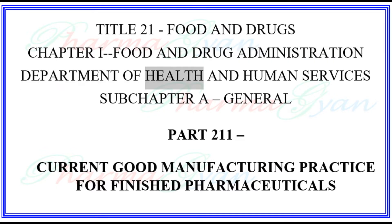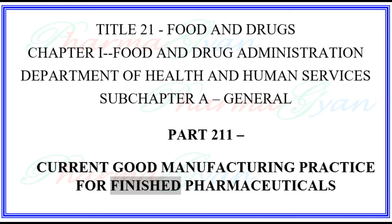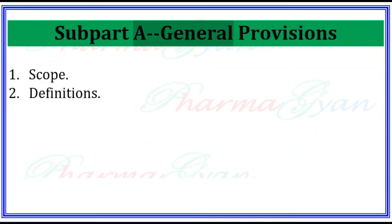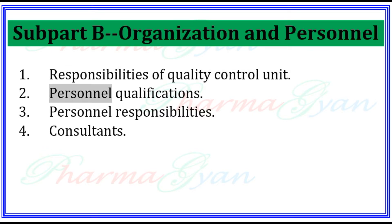Subchapter A General, Part 211 — Current Good Manufacturing Practice for Finished Pharmaceuticals. Subpart A: General Provisions — Scope and Definitions. Subpart B: Organization and Personnel — Responsibilities of Quality Control Unit, Personnel Qualifications, Personnel Responsibilities, and Consultants.